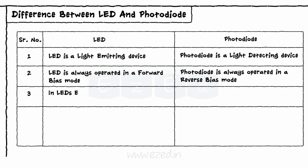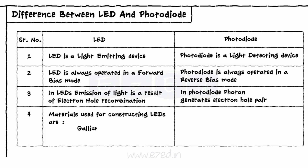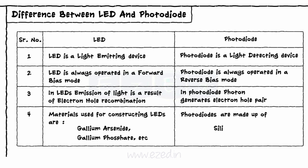In LEDs, emission of light is a result of electron hole recombination, whereas in a photodiode, a photon generates an electron hole pair. Materials used for constructing LEDs are gallium arsenide and gallium phosphate etc., whereas photodiodes are made up of silicon.